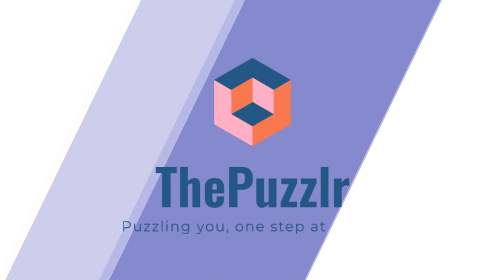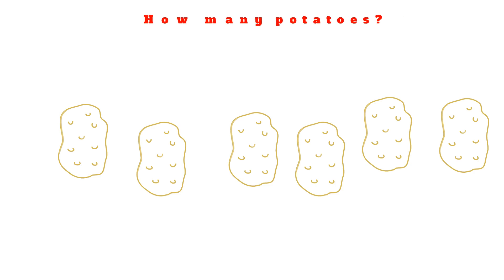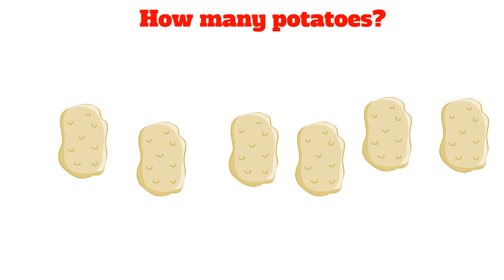This video is brought to you by ThePuzzler.com. How many potatoes do you see on the screen right now? You might see that first potato, the second potato, the third potato, the fourth potato, the fifth potato, and the sixth potato. So there's a total of six potatoes on the screen right now.